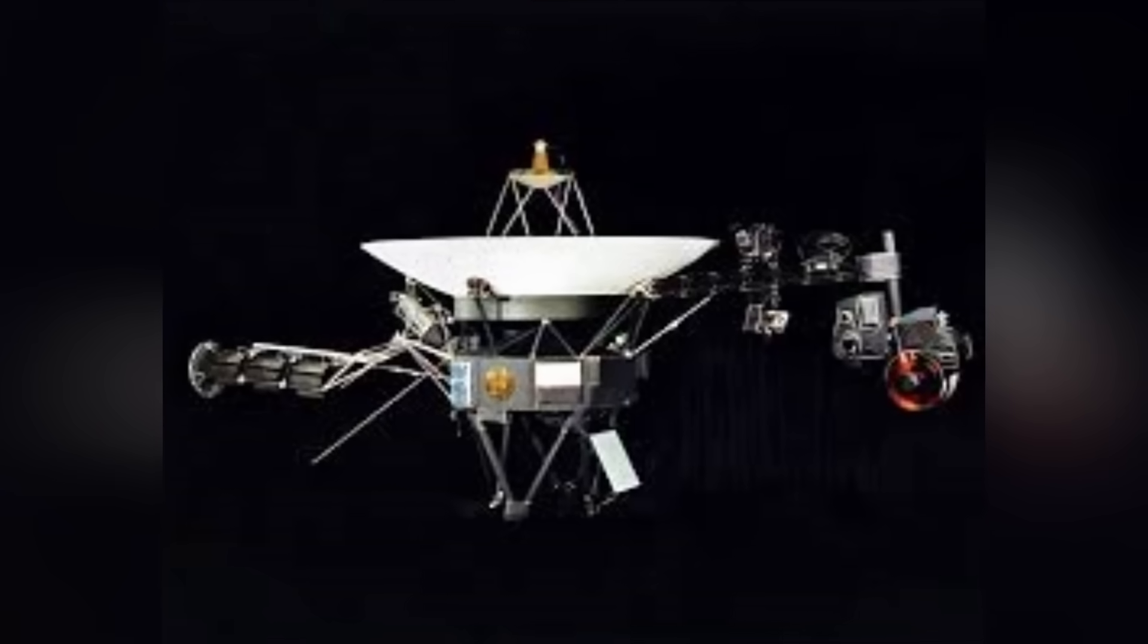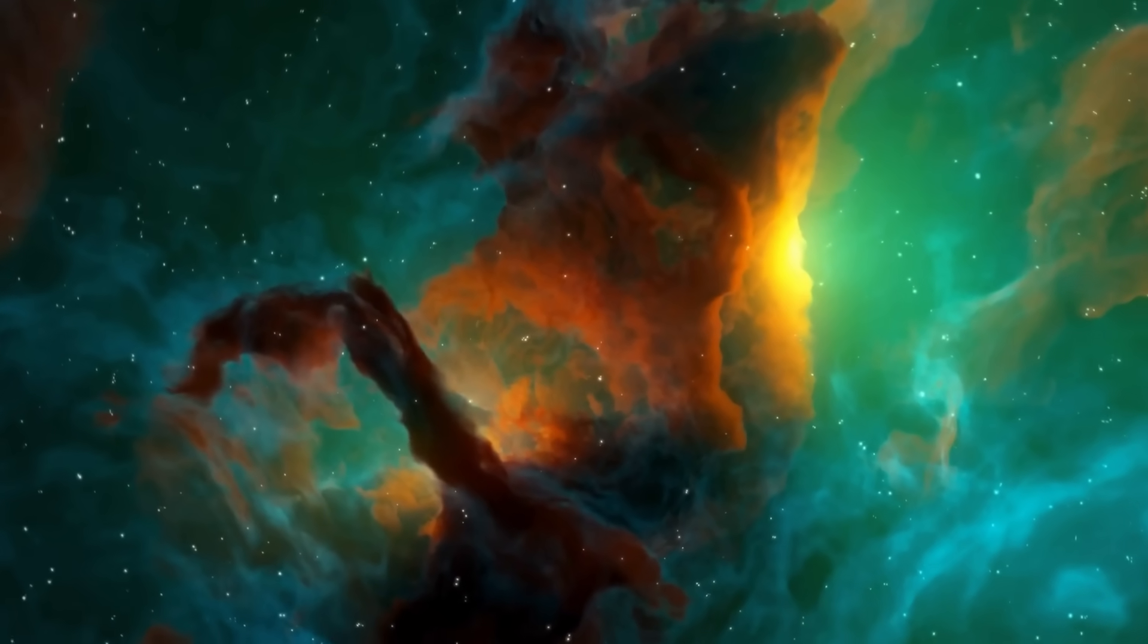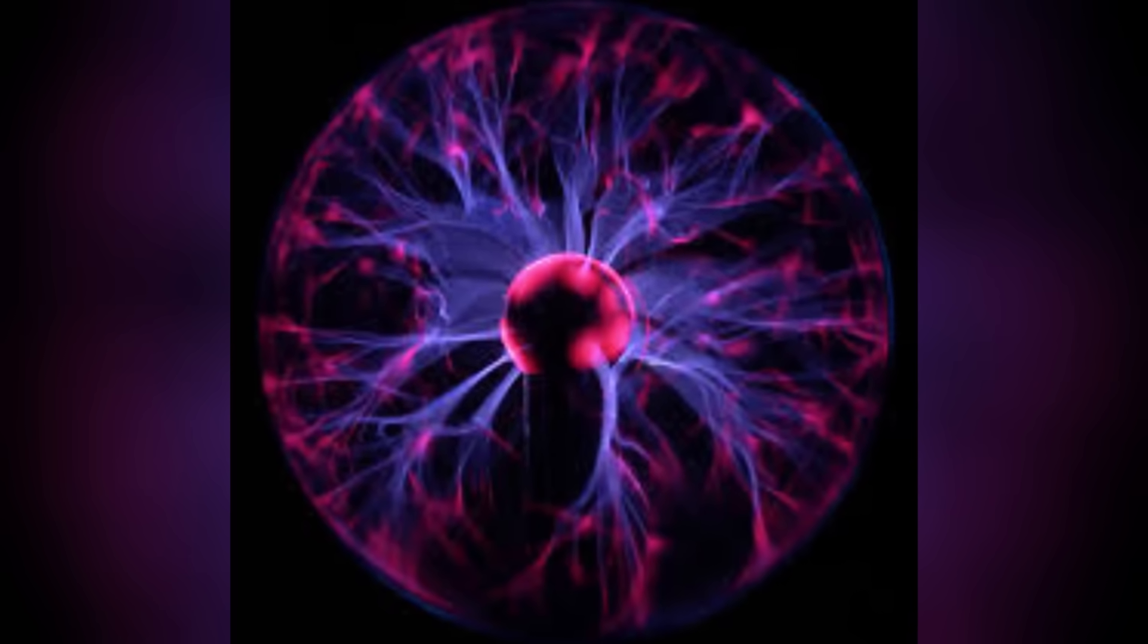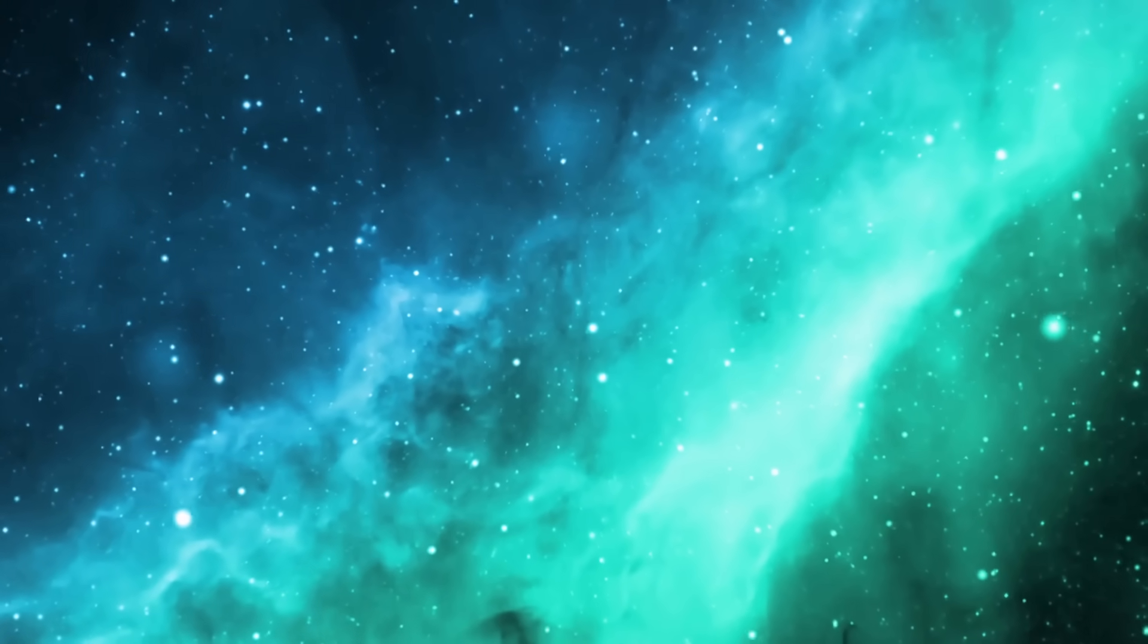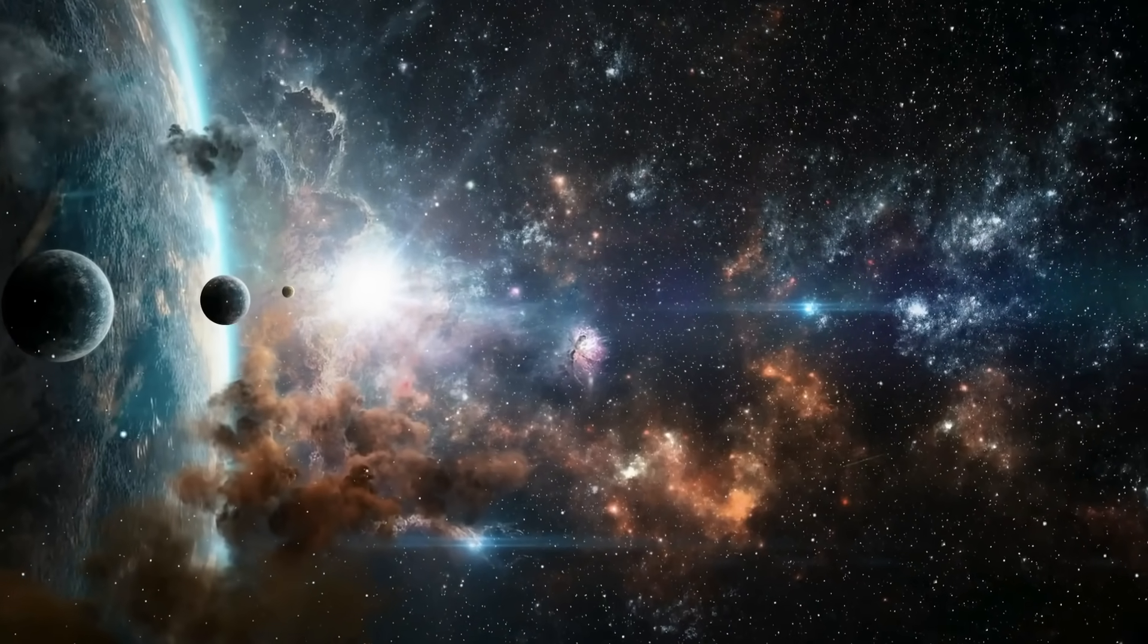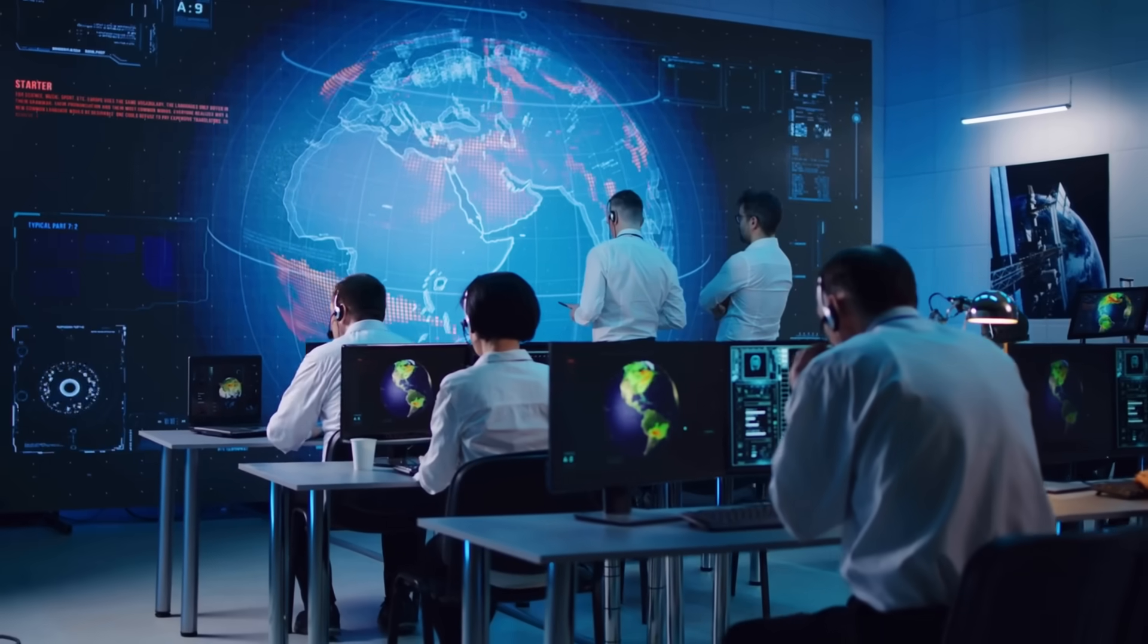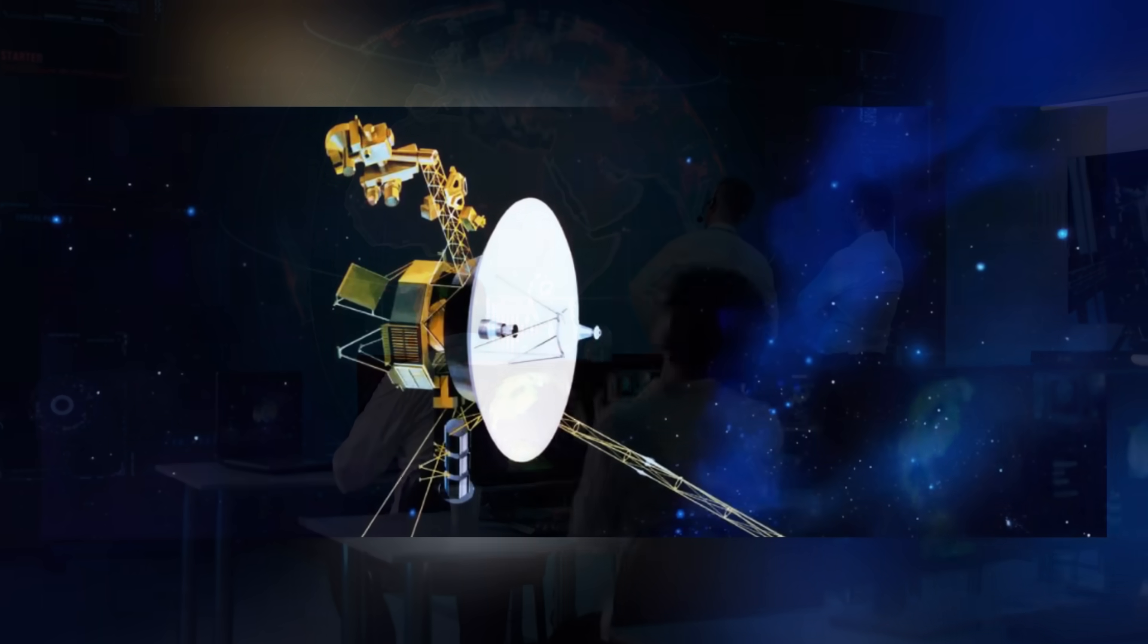Although they have traveled distinct routes, the twin spacecraft Voyager 1 and Voyager 2 are both dedicated to exploring the universe. Voyager 2's extended planetary mission and operational plasma instrument have offered unique insights into the outer planets and the border between the solar system and interstellar space. Even though Voyager 1 was the first spacecraft to traverse interstellar space, collectively they have given humanity a better knowledge of our position in the cosmos.